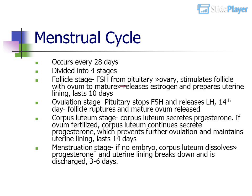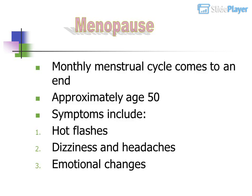The corpus luteum stage: the corpus luteum secretes progesterone. If the ovum is fertilized, the corpus luteum continues to secrete progesterone, which prevents further ovulation and maintains the uterine lining. This lasts 14 days. The menstruation stage: if no embryo, the corpus luteum dissolves, progesterone drops, and the uterine lining breaks down and is discharged over 3 to 6 days.